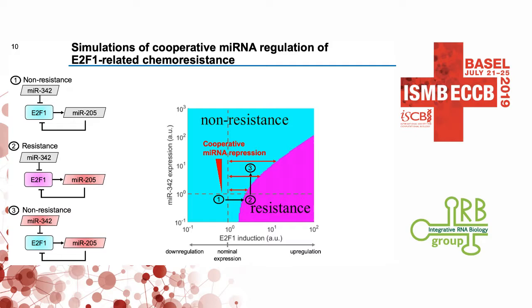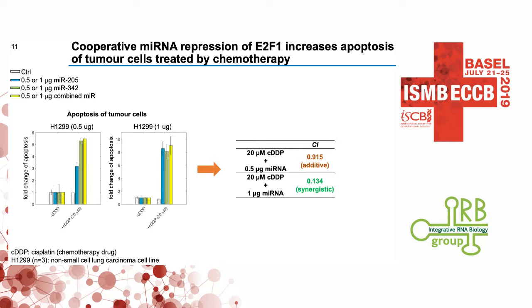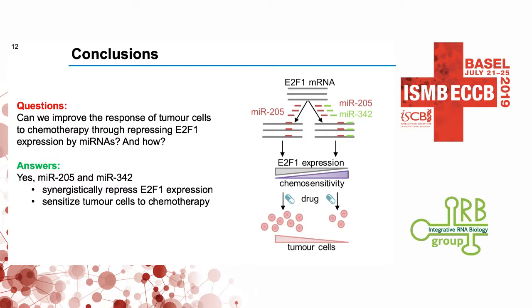This is what we expected to see and what we found. We then validated this in vitro using different amounts of microRNAs, showing that apoptosis of tumor cells occurs most significantly when combined microRNA therapies are used. We also applied the combination index to assess whether the effect is synergistic. The result is more complex than expected, but at higher microRNA concentrations we observed synergistic effects in the cancer cells.